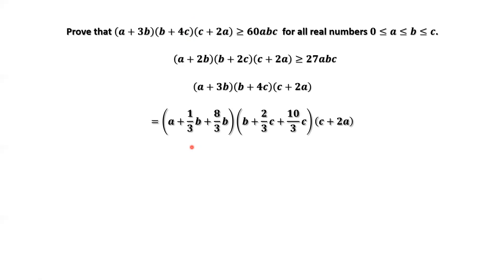Another tricky idea here is that 3b can be decomposed into (1/3)b + (8/3)b, which equals 3b. You can see 1 plus 8 is 9, and 9 over 3 is 3. We are going to do the same thing for 4c. 4c equals (2/3)c + (10/3)c. You can see 10 plus 2 is 12, and 12 divided by 3 is 4.